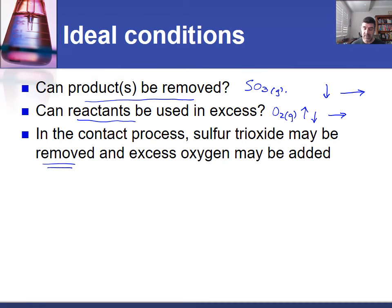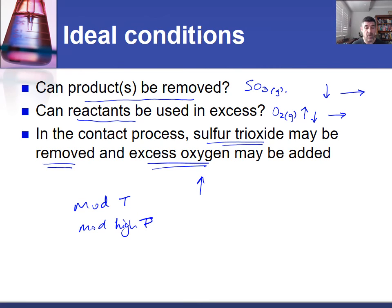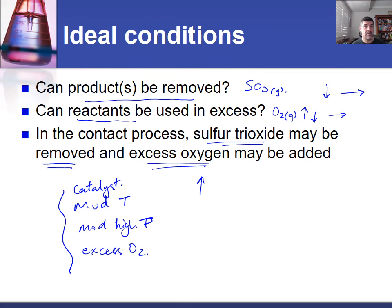In summary, for the contact process we can either remove sulfur trioxide product to shift equilibrium to the right and increase yield, or add excess oxygen to achieve the same effect. Moderate temperatures and moderately high pressures — not too high, since the 3:2 ratio makes the extra benefit less meaningful — along with a catalyst and addition of excess oxygen all help maximize yield. The important thing is to apply similar logic here as you would when explaining the Haber process when dealing with the contact process and maximizing sulfuric acid production.